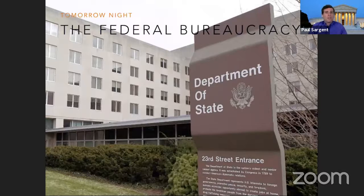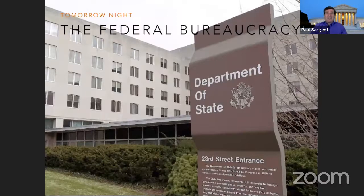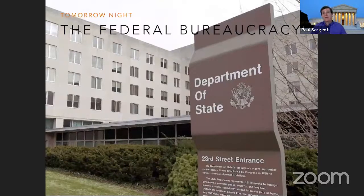That brings us to the end. Tomorrow night we're going to tackle what many people call the fourth branch of government — the federal bureaucracy — which was not much at the beginning of our republic but has today grown to a workforce of over 2 million people carrying out all kinds of jobs. That's it for night five of the Bill of Rights Institute's webcasts for the AP U.S. Government and Politics exam. I hope you're getting a good refresher. All past episodes are on YouTube. I'll see you tomorrow night at eight o'clock. For the Bill of Rights Institute, my name is Paul Sargent — be safe out there and have a great night.